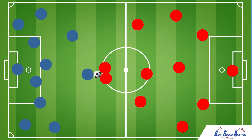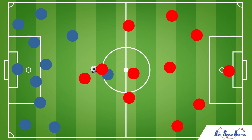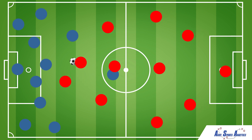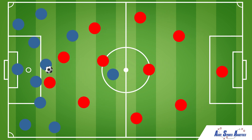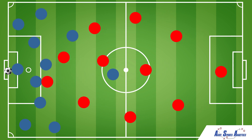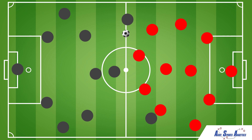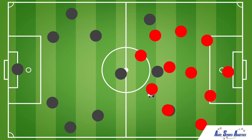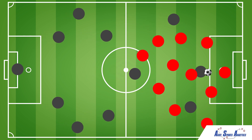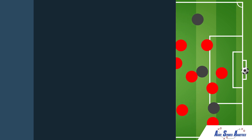The players for Team A play selfish and not as a cohesive unit, while the players for Team B move in sync and play with synergy.